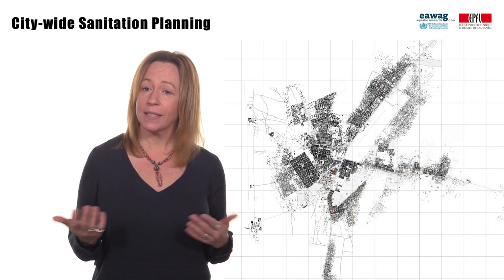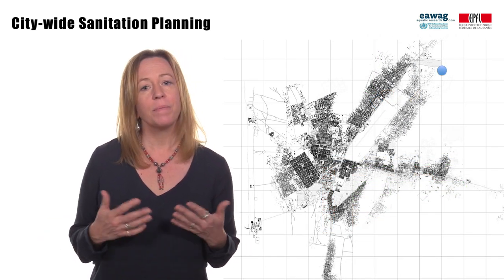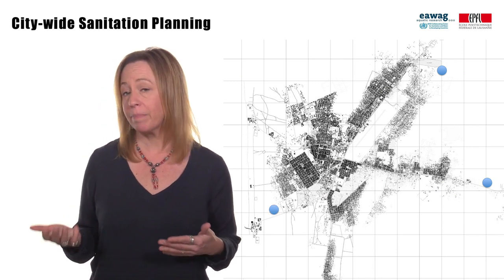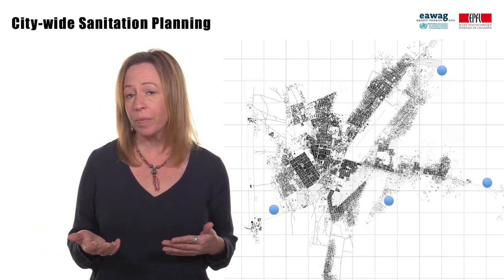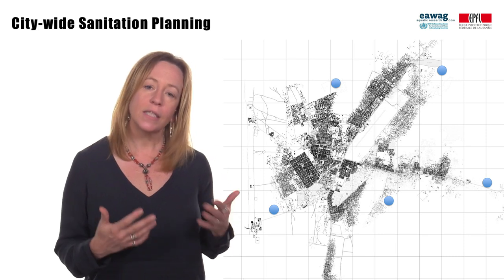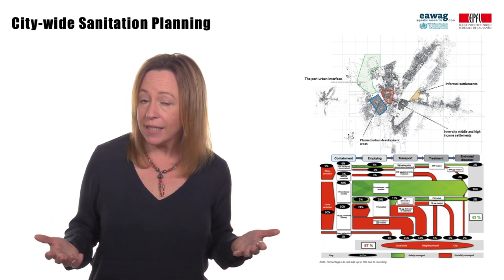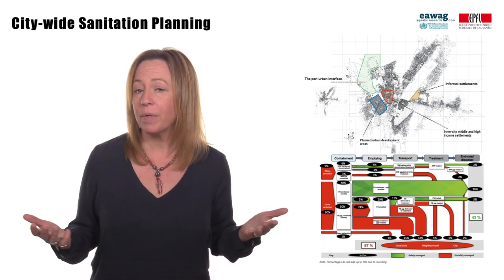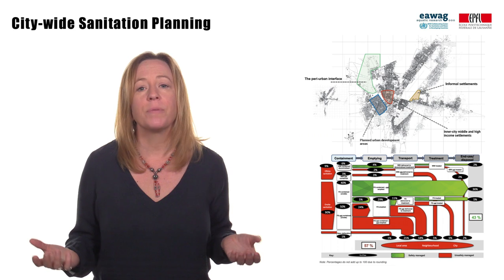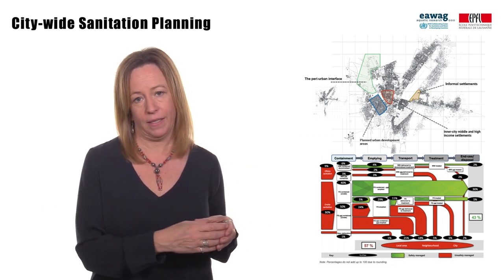One example is site selection. Due to the difficulty of obtaining land in urban areas that is expensive and not readily available, it will already affect technology selection, as treatment options that are very land-intensive tend to be much less expensive, whereas treatment options that don't require a lot of land tend to be much more expensive.